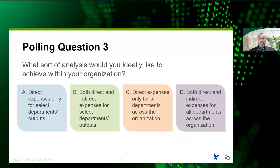Third polling question: what sort of analysis would you ideally like to achieve within your organization? Would you like to look at just direct expenses for certain departments and their outputs? Both direct and indirect, but only for certain departments? Or across your entire organization — all outputs, all departments, direct and indirect? The preponderance of answers is direct and indirect for all departments across the organization, about 60% of you. Next biggest is direct and indirect expenses for select departments at about 22%. It's really interesting that there's a lot of interest in the direct and indirect rather than just the direct only — I'm a firm proponent for the direct and indirect because I think it tells you a lot.